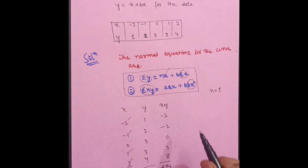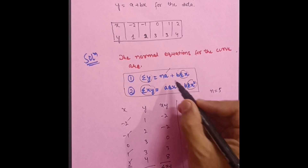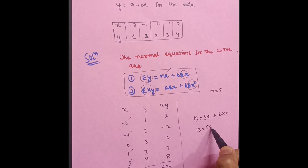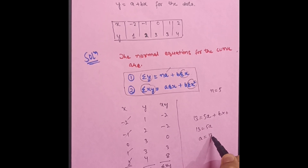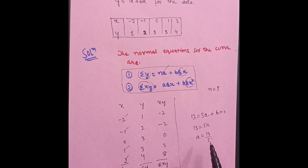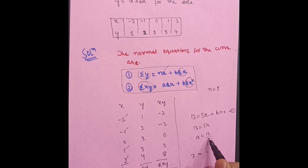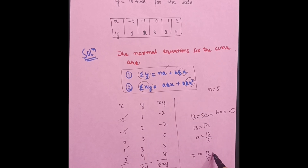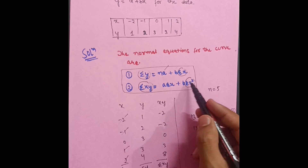Now substitute these values into the normal equations. The first equation is: Σy = na + b·Σx, which gives 13 = 5a + b(0), so 13 = 5a. Therefore a = 13/5. The second normal equation is: Σxy = a·Σx + b·Σx². Substituting: 7 = (13/5)(0) + b·Σx², so 7 = b·Σx².